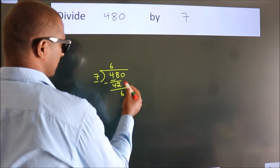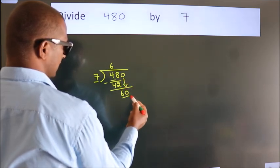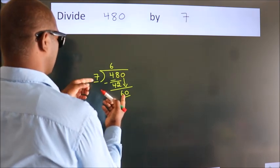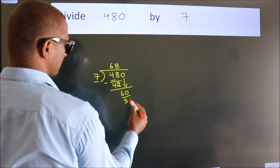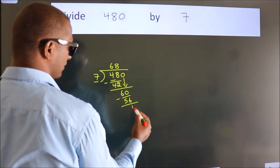After this, bring down the beside number. So 0 down, so 60. A number close to 60 in 7 table is 7, 8, 56. Now we subtract. We get 4.